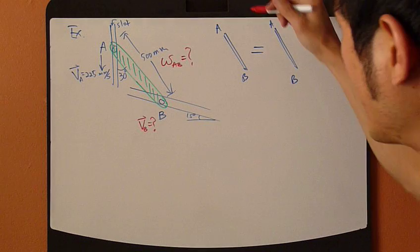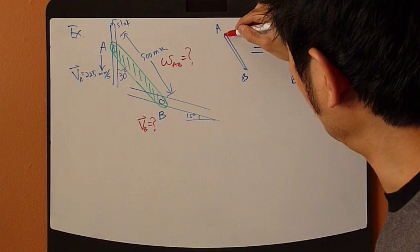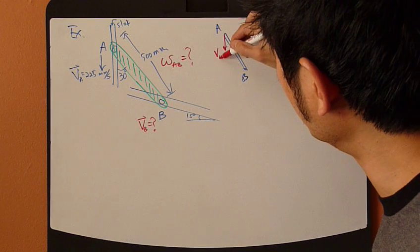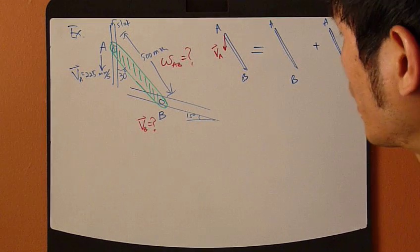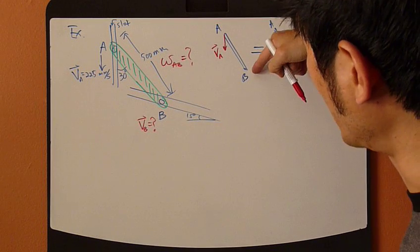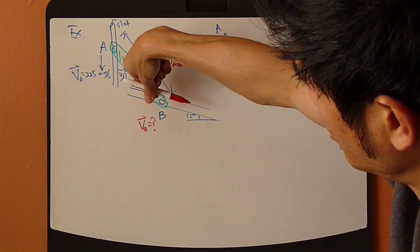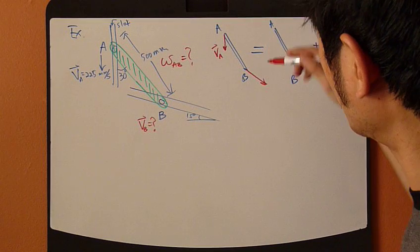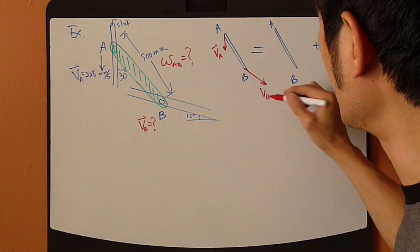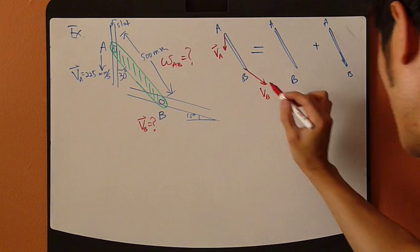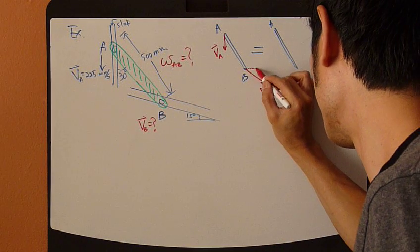Now, next, draw velocity. So VA is going straight down. That's given. VB, you don't know. It's the unknown, but you do know the direction, which is going down this way. So that's my VB. And you do know that it makes a 15-degree angle. So, let's go.